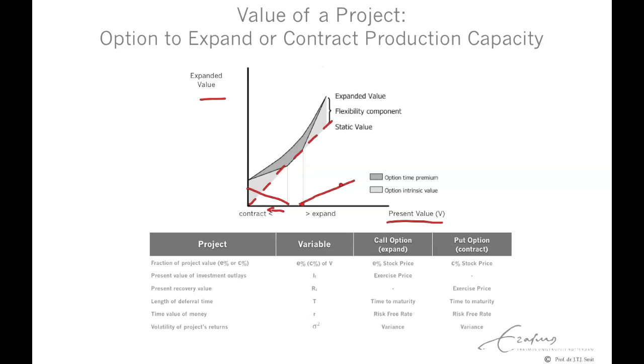Now combining the put and the call option with the value of the production facilities, we get the following payoff at year one. We have contraction at low value, then an intermediate part, and then an expansion of 50% at the higher value. This is the value at maturity, T equals 1, including both options.